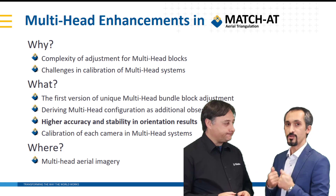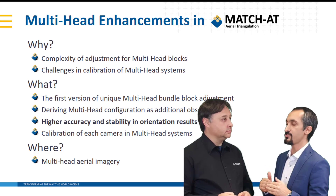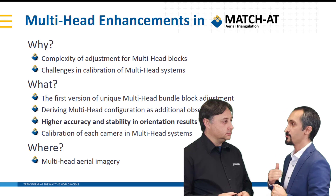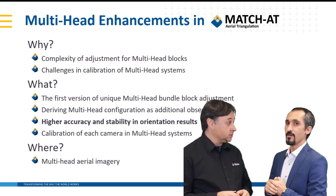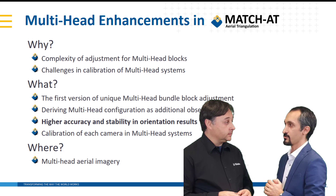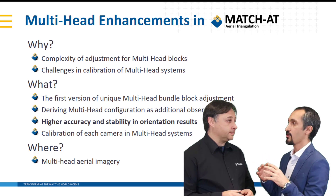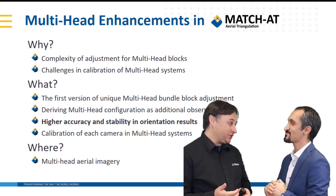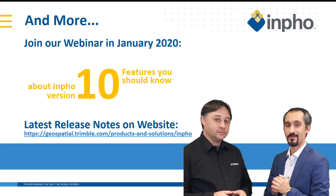The key points in this regard are calibration and bundle block adjustment. We are proud to introduce our first version of what I would say is a unique multi-head bundle block adjustment in Inpho version 10, offering higher accuracy and stability in orientation results. It will handle these multi-head projects faster and better — very helpful for productivity and higher accuracy results, because we are using the configuration of the multi-head platform as additional information for the bundle block adjustment, which improves the accuracy and reliability of the bundle block adjustment.